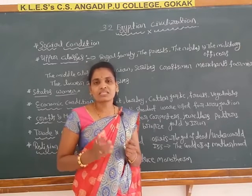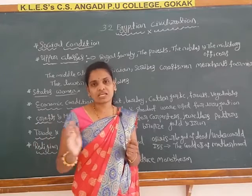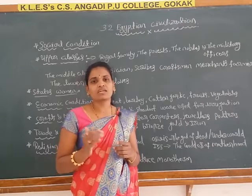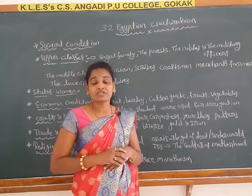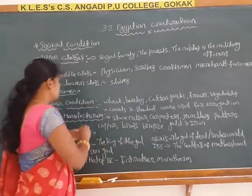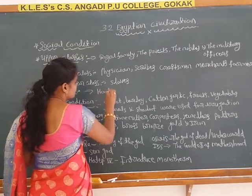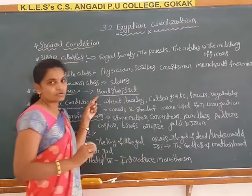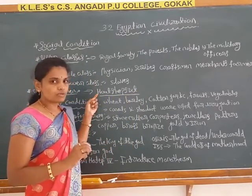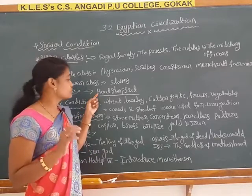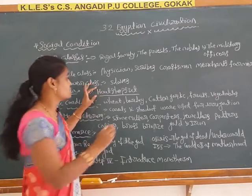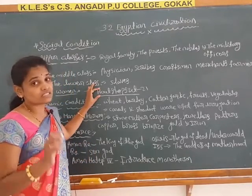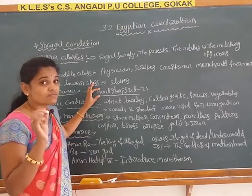Such a high status was not found in any other civilization. Egypt civilization had this credit. Egypt civilization was ruled by Hatshepsut, who was the daughter of Thutmose. Hatshepsut ruled Egyptian civilization for 21 years, and for that reason Hatshepsut was the first empress in the world.